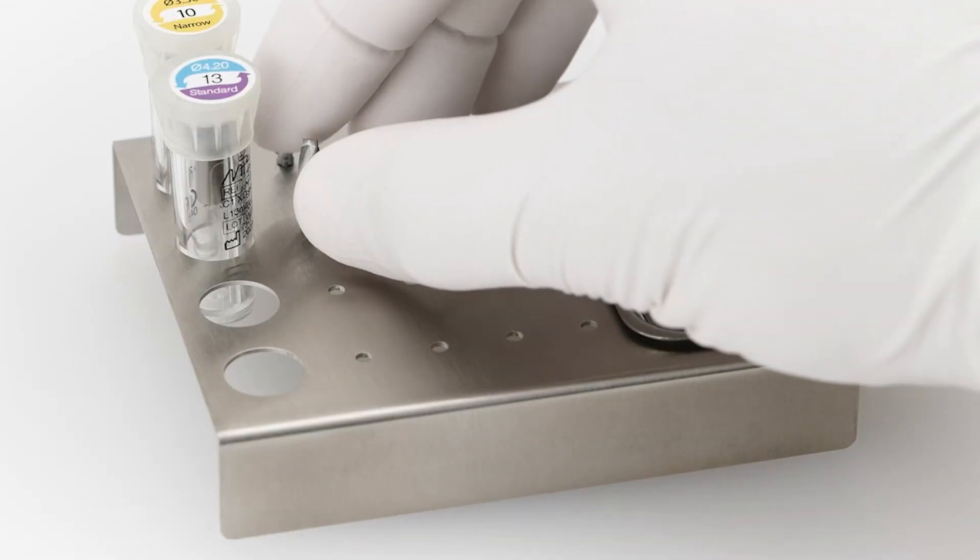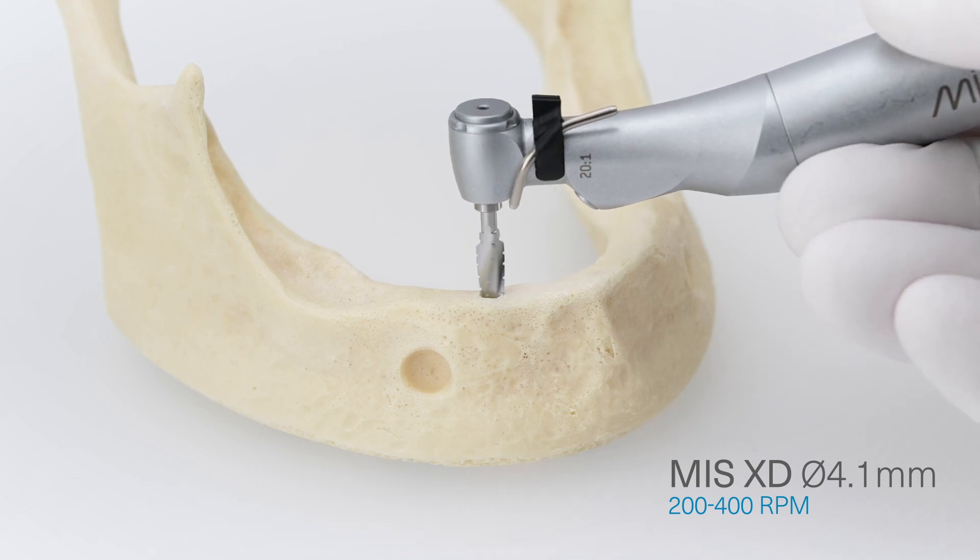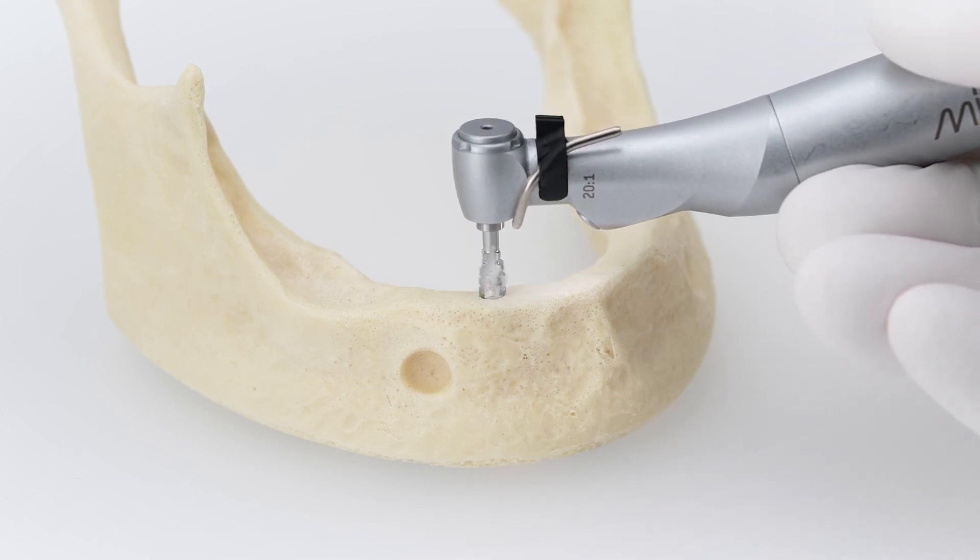Next, use the XD 4.1 diameter procedure drill. This drill is the last drill of the sequence and is compatible with the implant shape and dimensions.